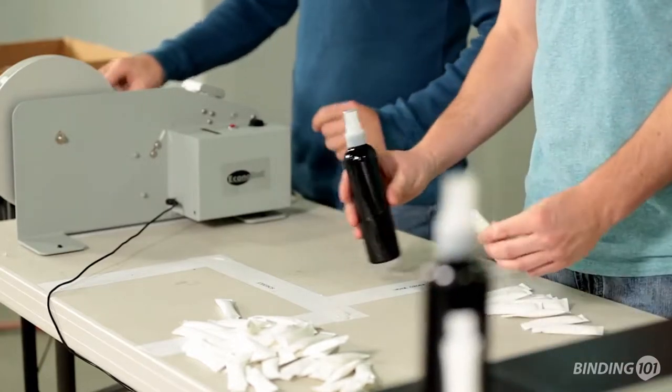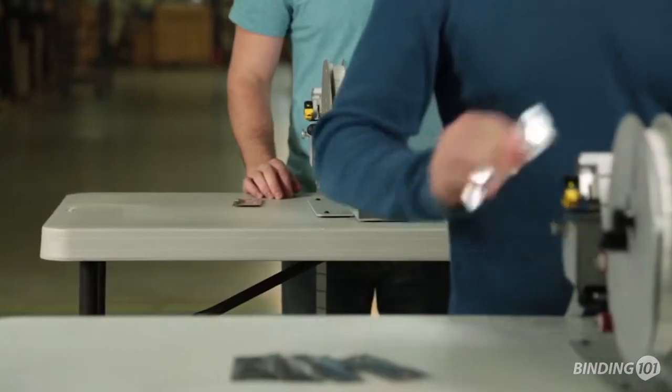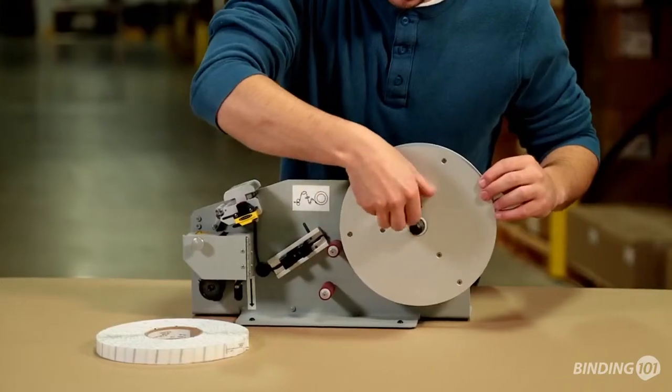The EconoDot is only compatible with GlueDot's brand adhesive rolls with a registered liner. Loading the adhesive onto the EconoDot is quick and easy.